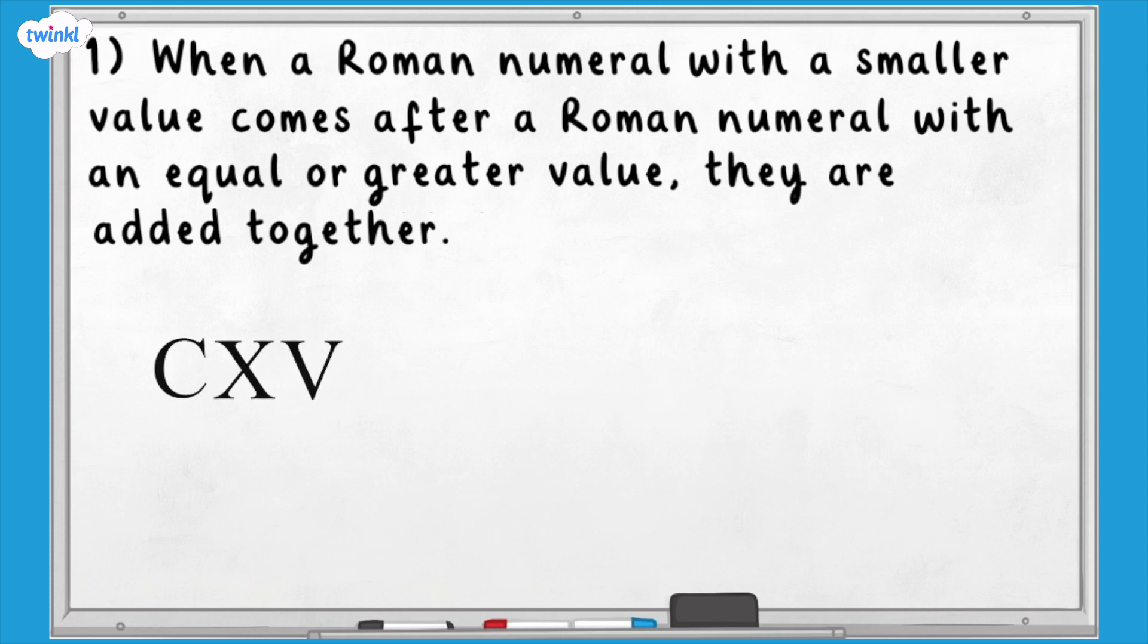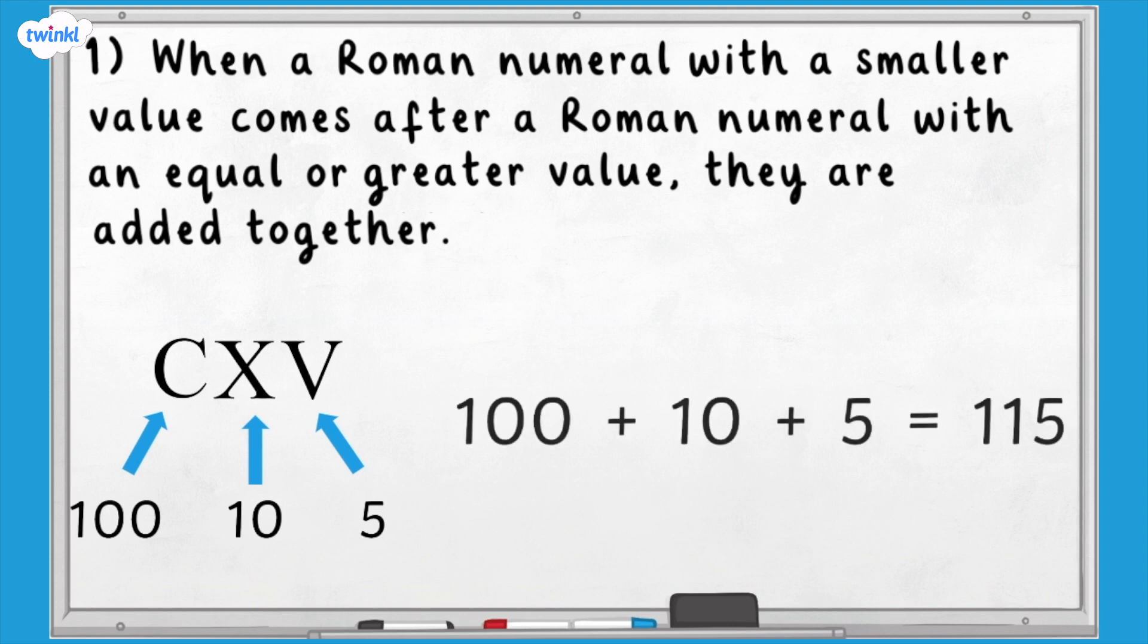In the Roman numeral CXV, the values represented are 100, 10 and 5. As the smaller values come after the greater values, we simply add the values together. CXV represents the number 115.